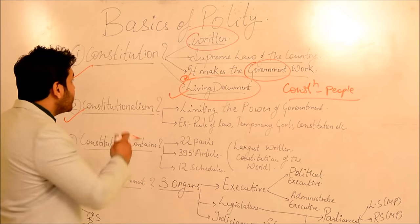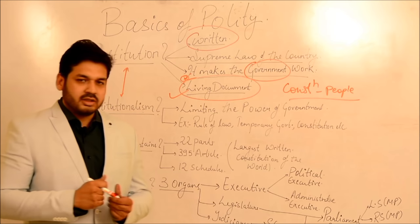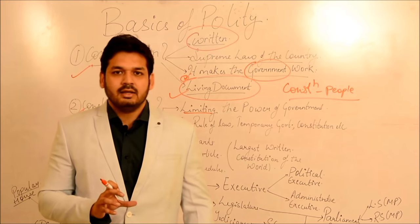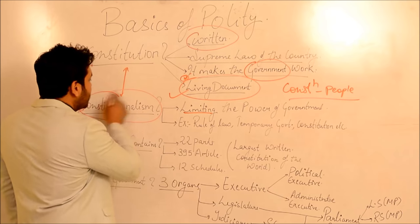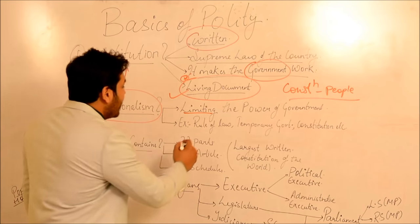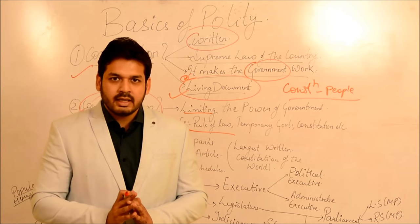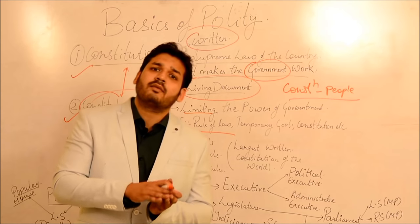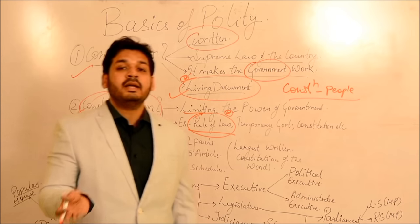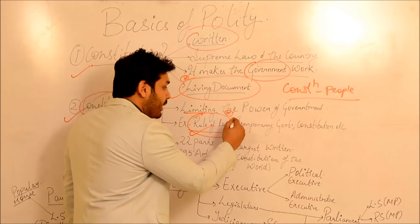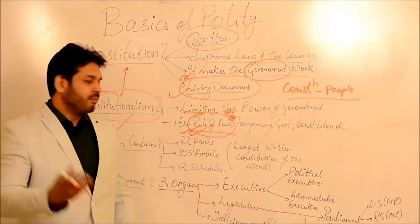Next topic: what is Constitutionalism? There is a difference between Constitution and Constitutionalism. Constitutionalism means limiting the powers of the government - so the government doesn't become autocratic, its powers are limited. That is constitutionalism. How can we limit the government? One example is Rule of Law - law is supreme here. Whether it's Salman Khan or anyone else, if they go against the law, they will get punishment. Even government servants, if they go against the law, they will get punishment. So law is supreme, and this limits the government.